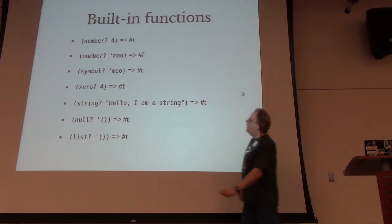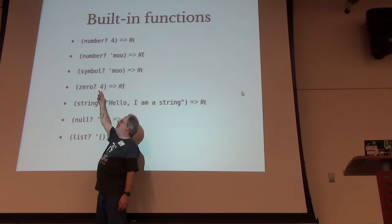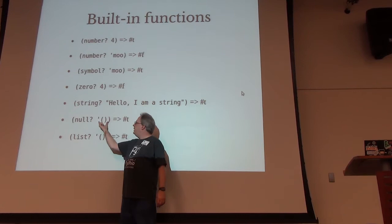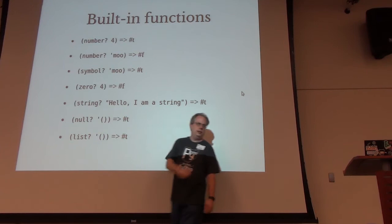Here are some built-in functions. You've seen 'number?' for determining whether something is a number, 'zero?' for whether it equals zero — 4 is not zero, so that's false. 'string?' confirms a string. 'null?' — the empty list comes back as null in this language, so you can test for null with the null? function. The empty list is also a list.